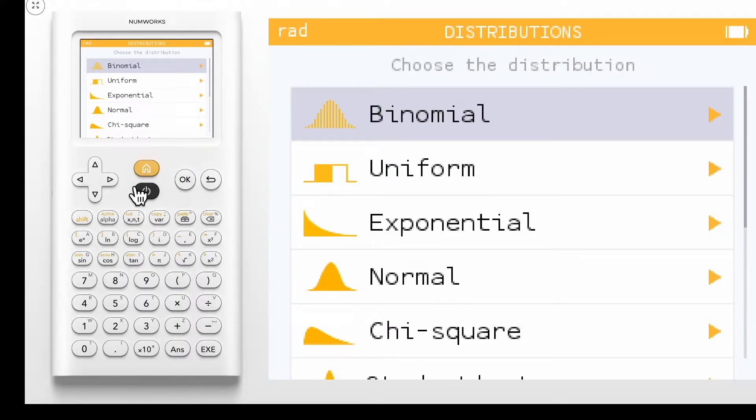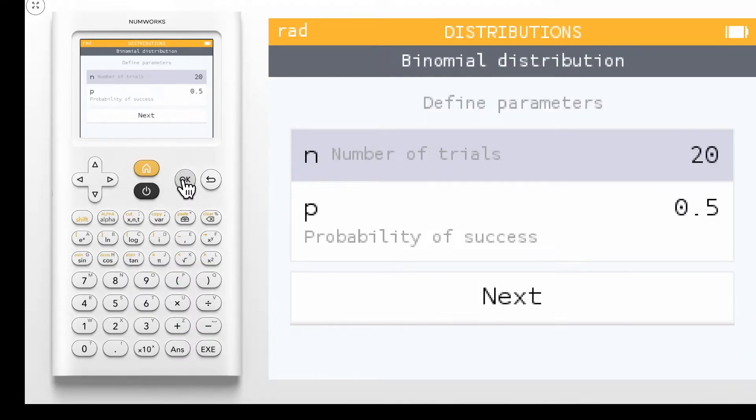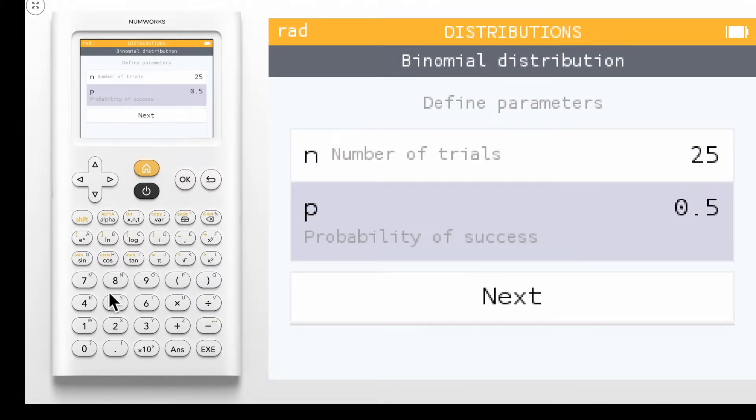From the list of probabilities, select binomial. The first step is to enter the number of trials and the probability for success. In this example, we'll use 25 for n and 25 hundredths for p.